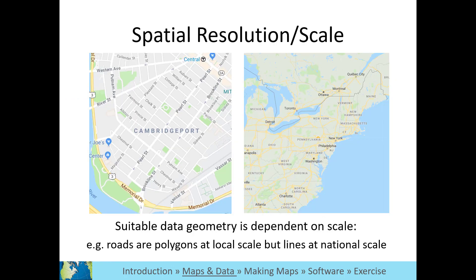The spatial data you make visible on a map depends on its scale, meaning how small or large of an area you are showing. Online maps are usually programmed to show certain types of data at certain scales, so what you see changes as you zoom in or out. You can do the same thing with maps you create using web-based or desktop GIS software. You should show enough detail at a particular scale so that your viewer can clearly see all the features you have added.